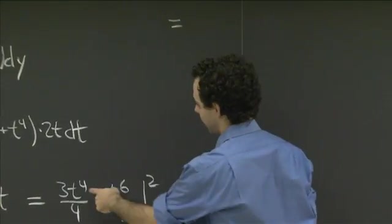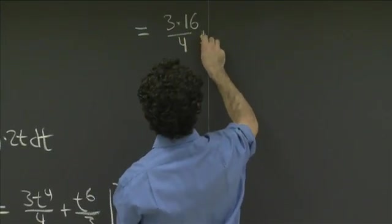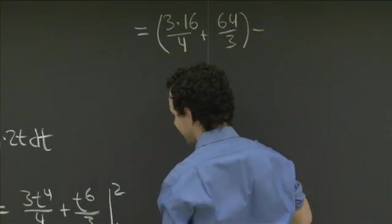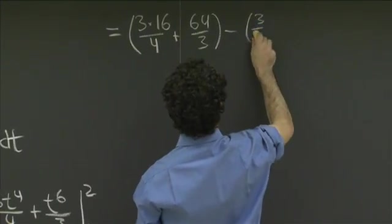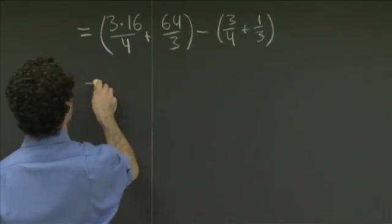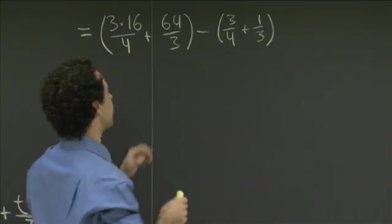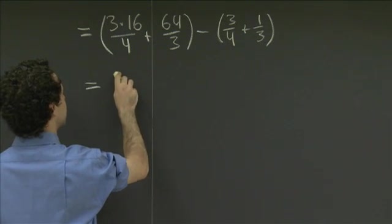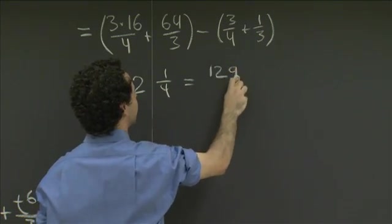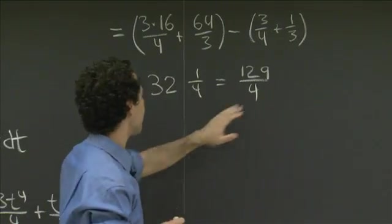So that's equal to 3 times 16 over 4 plus 64 over 3 minus 3 fourths plus 1 third. And now we've got to work this out. So this is maybe 12, and the thirds give me 21. So that's 33 minus 3 quarters. So that's 32 and 1 quarter, or 129 over 4.